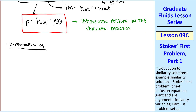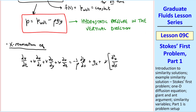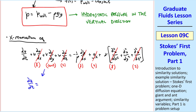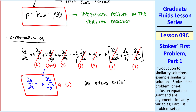Now let's look at the x-momentum equation, expanded in Cartesian coordinates. Crossing off terms: nothing is a function of x, v is zero by continuity, it's 2D, no gravity in the x-direction. We're left with only two terms: del u del t equals nu times del squared u del y squared. I'll call this Equation 1, which is the 1D diffusion equation. This is the differential equation we need to solve.